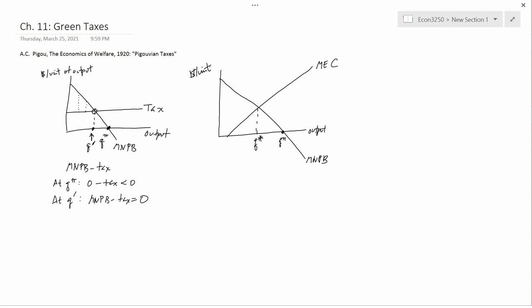To the left of Q star, the value of producing output, which is MNPB, is above the social cost of producing output, which is MEC. And so society would want that output to be produced. But to the right of Q star, output is generating such high external costs that from society's point of view it wouldn't be worth it, because the marginal external cost is greater than the marginal net private benefit. So that's why Q star is the socially optimal level of output.